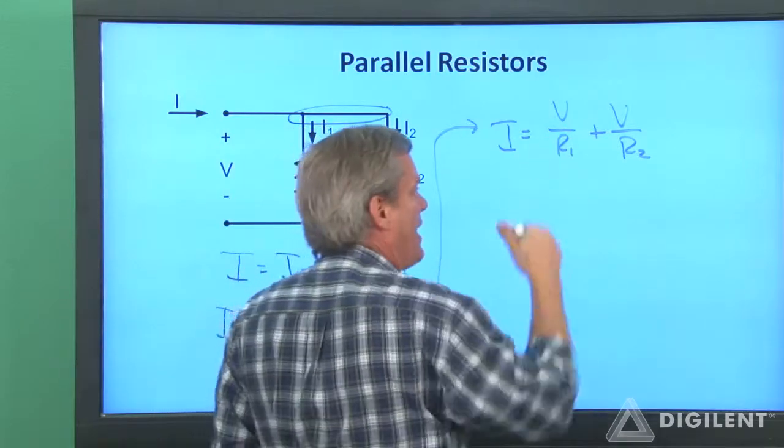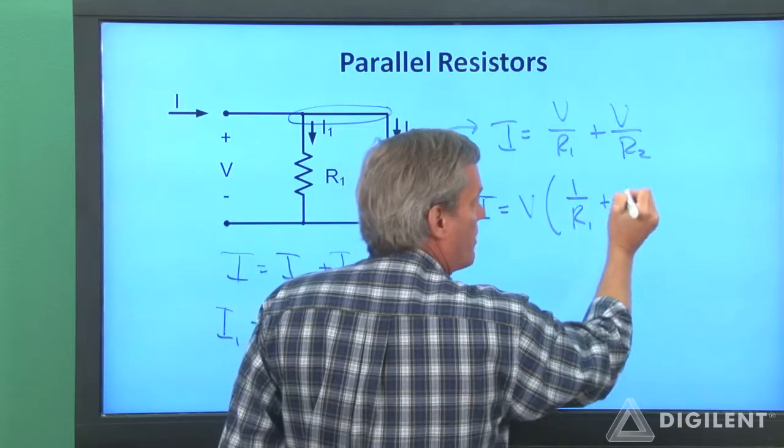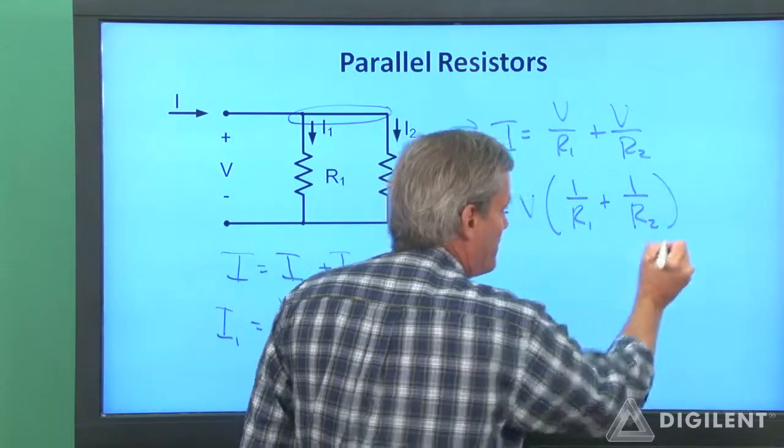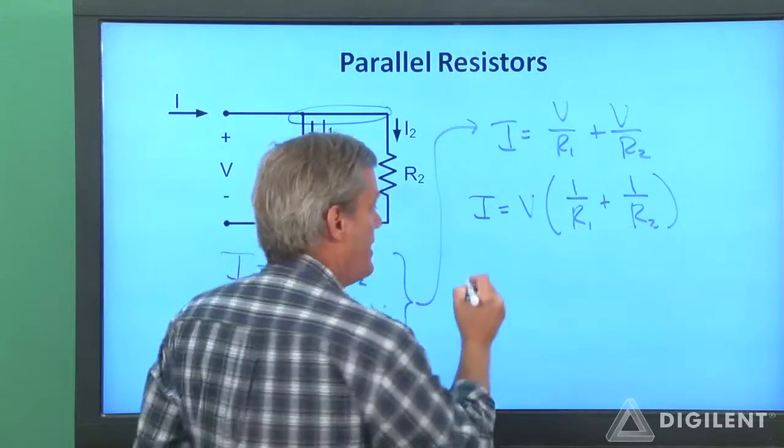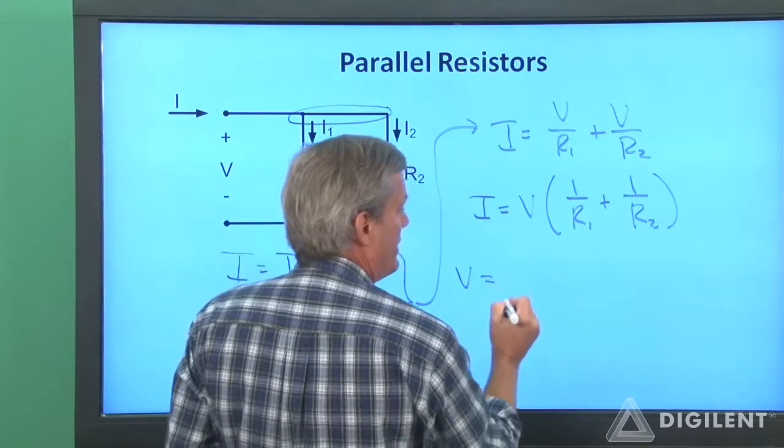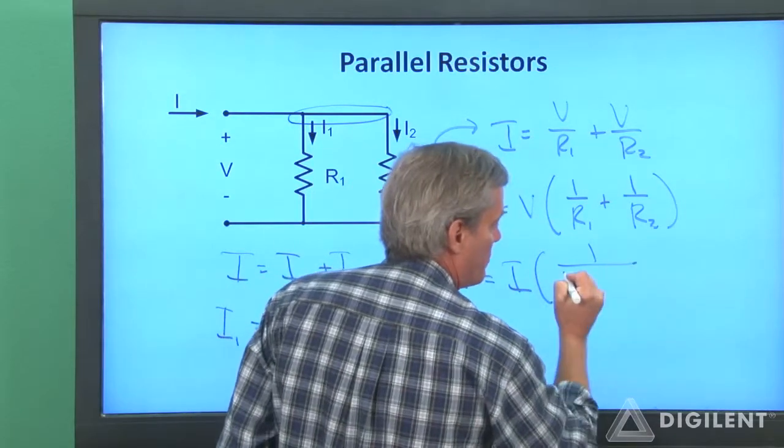I can pull the V out of this expression and say I is equal to V times 1 over R1 plus 1 over R2. If I divide both sides by this guy, I can write the voltage V as being I times 1 over this whole mass.